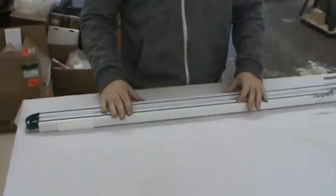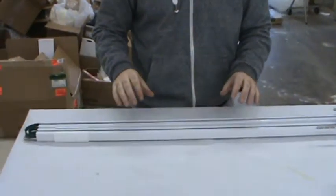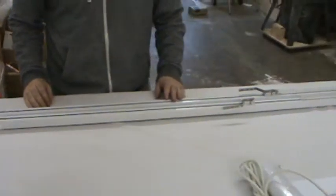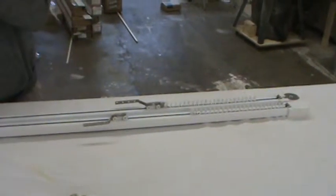A lot of times due to limitations for shipping, the track has to be shipped into two sections. So after you unpackage everything and get it out of the box, this is generally how it will look. So to splice it back together,